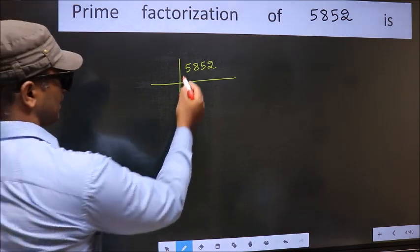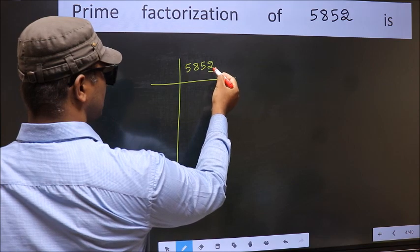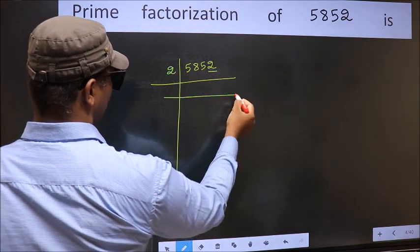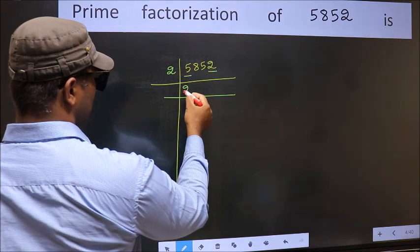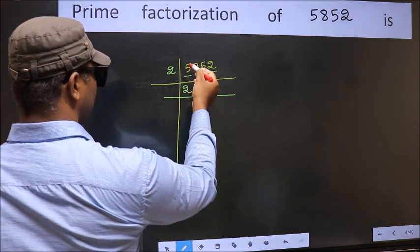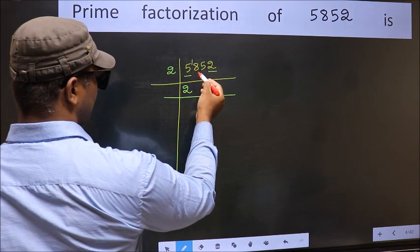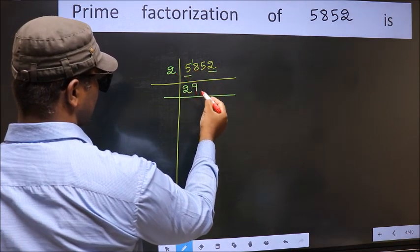In this number, last digit is 2, even, so take 2. First number 5. A number close to 5 in 2 table is 2 times 2 is 4. 5 minus 4 is 1, 1 carried forward 18. When do we get 18 in 2 table? 2 times 9 is 18.